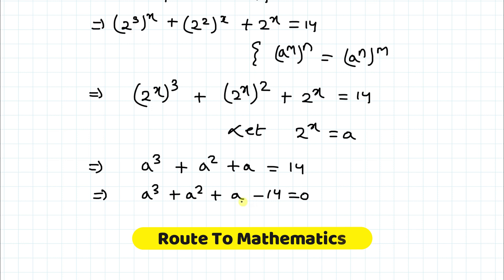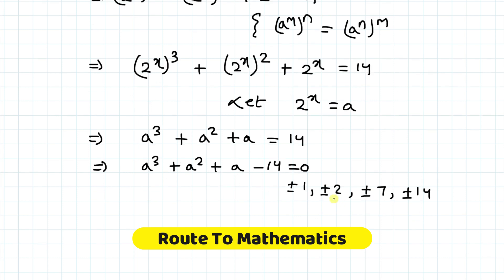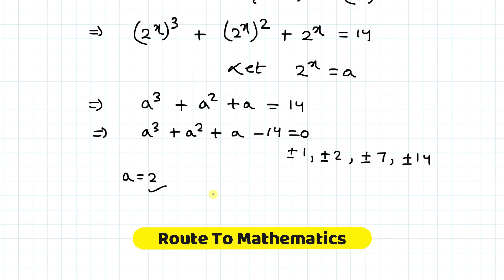To solve this cubic equation we need to find its factors. The factors of 14 are ±1, ±2, ±7, and ±14. Testing a = 2: 2³ + 2² + 2 - 14 = 8 + 4 + 2 - 14 = 0. So a = 2 is one solution, meaning (a - 2) is a factor.